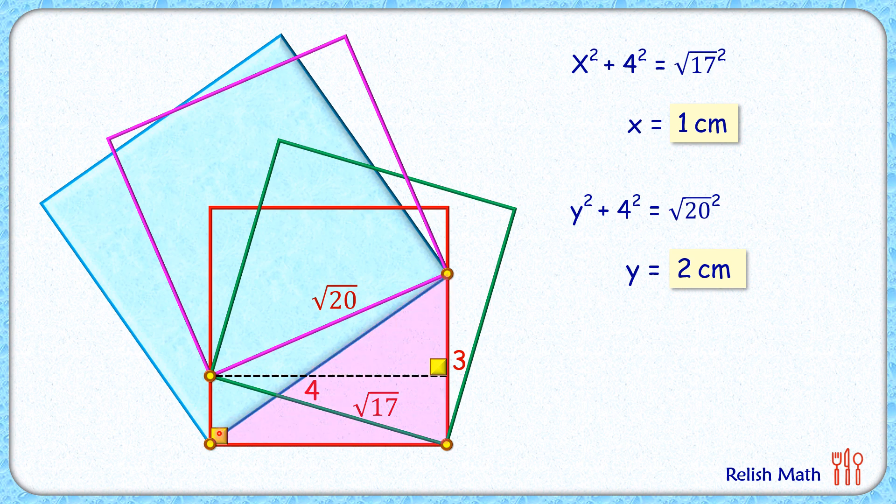Now if we will consider this right angle triangle again. And this point let's name them as point A and B. And here this base length is 4 cm. Applying Pythagoras theorem will get 3² + 4² = AB². So solving it will get AB as 5 cm.